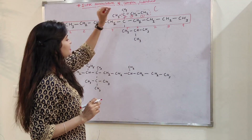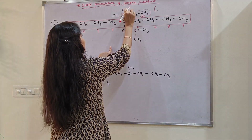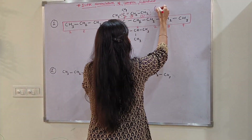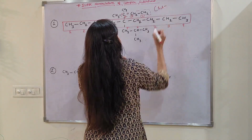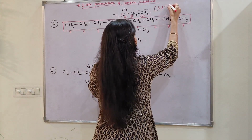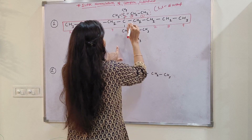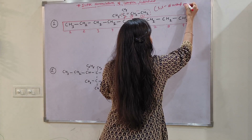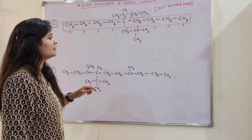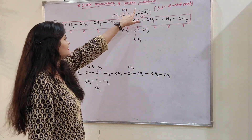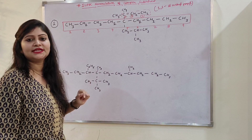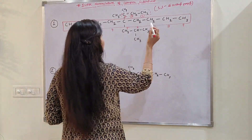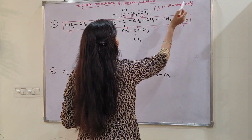On the first carbon of this chain, there are two methyl groups — here and here. There are two methyls, so we write 'dimethyl'. The position of both methyls is on the first carbon, so we write 1,1-dimethyl. The longest chain has a total of 3 carbons, so the root word is 'prop'. Since this is a complex substituent, we add the suffix '-yl', making it 'propyl'. So the name is 1,1-dimethylpropyl.